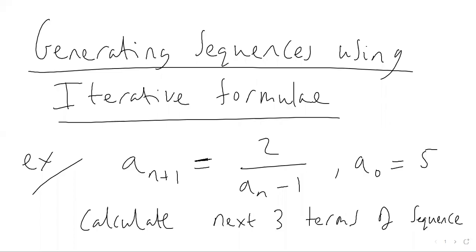This video is about iterative sequences — sequences that we can generate from iterative formulas. You've probably seen iterative formulas before, something like a_(n+1) equals two over a_n minus one, and the question gives you that a_zero equals five. An iteration basically generates a sequence of numbers.